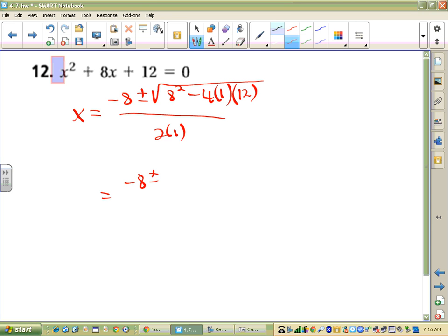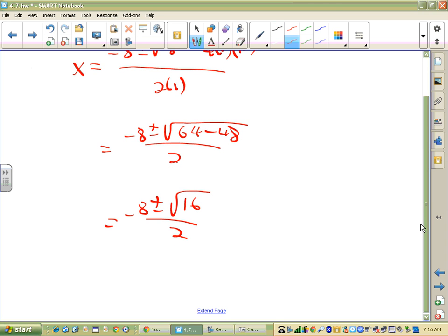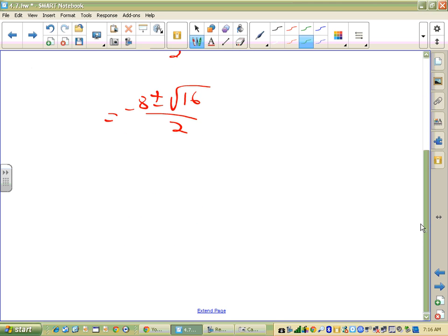So we get negative 8 plus or minus the square root of 64 minus 48 all over 2. So we get negative 8 plus or minus the square root of 16 all over 2.